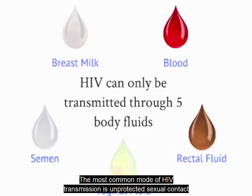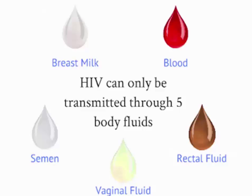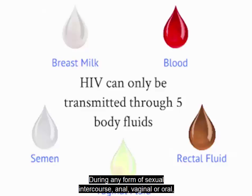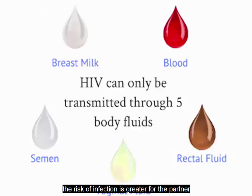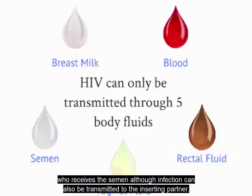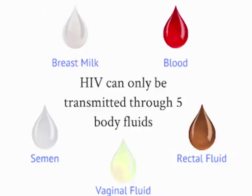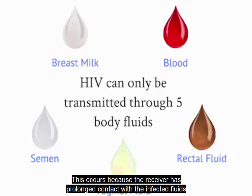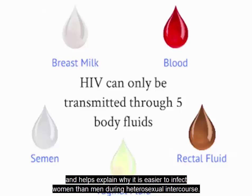The most common mode of HIV transmission is unprotected sexual contact with an HIV-infected partner. During any form of sexual intercourse — anal, vaginal, or oral — the risk of infection is greater for the partner who receives the semen, although infection can also be transmitted to the inserting partner. This occurs because the receiver has prolonged contact with the infected fluids, and helps explain why it is easier to infect women than men during heterosexual intercourse.